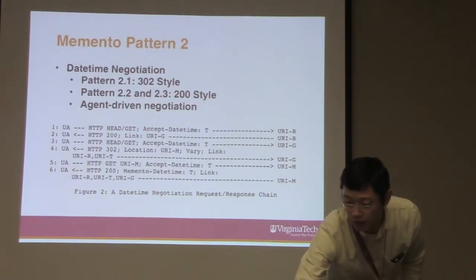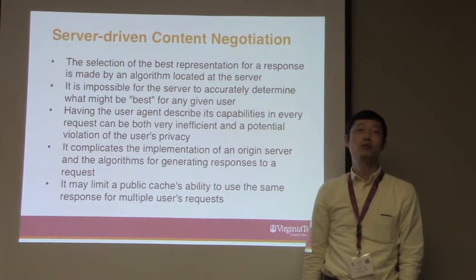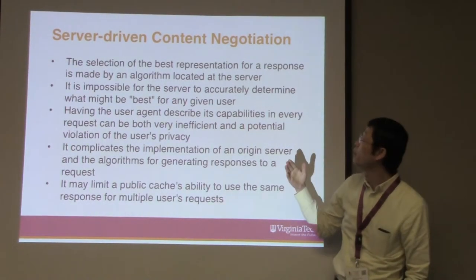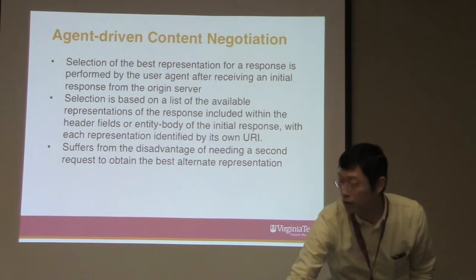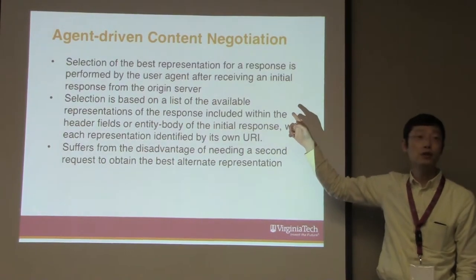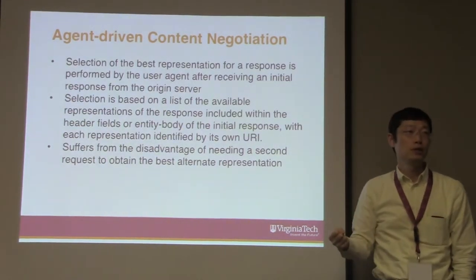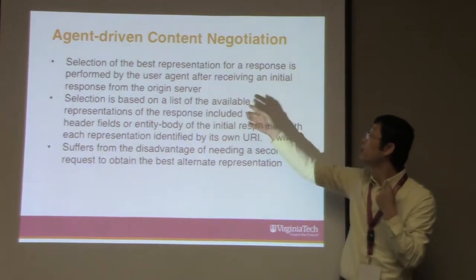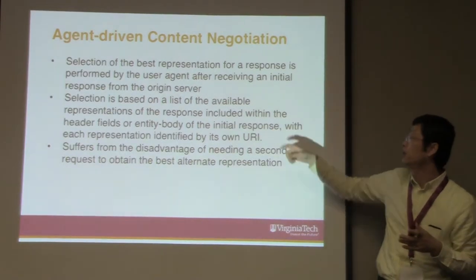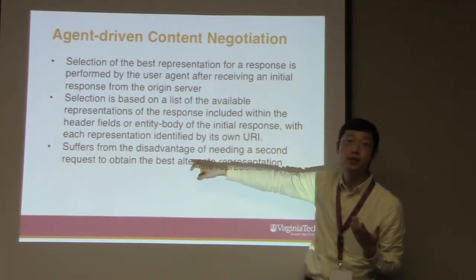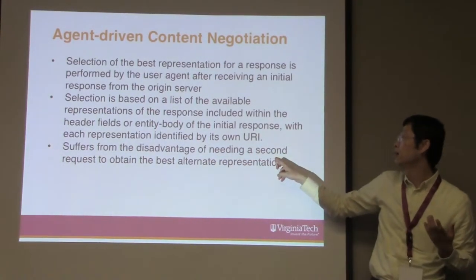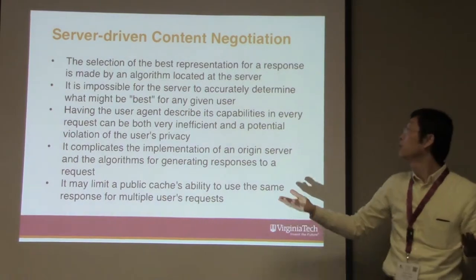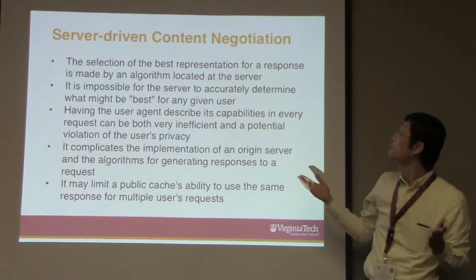The datetime negotiation still needs to happen, but it should not happen in that chatty way. So I went back to HTTP protocol and looked at content negotiation. There are various ways of content negotiation. The most common is agent-driven content negotiation, where the agent decides which option they want — the server gives all options, then the user agent tells the server which one it wants. The con is exactly what we're talking about: it's chatty, needing a second request to obtain the best representation. There's also server-driven content negotiation, where the server's algorithm selects the best representation. The server doesn't give you options — it just makes the decision for you.